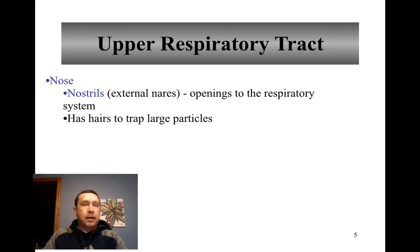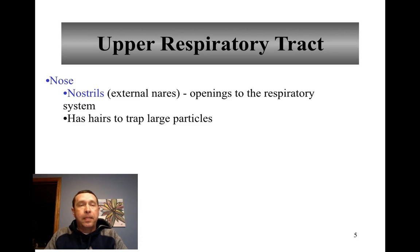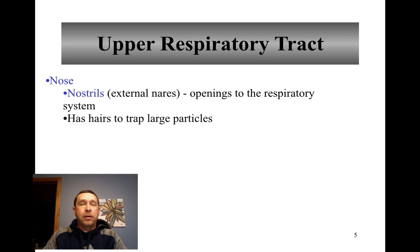The upper respiratory tract includes the nose, which is the opening into which air enters and leaves the respiratory system or leaves the body. The nose includes the external nares, or the nostrils. The nose has hairs to trap large particles that might get into the respiratory system and cause problems.